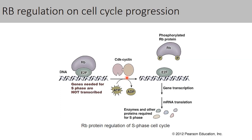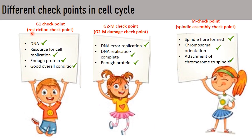The negative regulator retinoblastoma (Rb) regulates cell cycle progression as follows: E2F is a transcriptional factor that activates different target genes whose products — enzymes and proteins — are required for S phase. Retinoblastoma binds to E2F, making it inactive, so genes necessary for S phase are not transcribed. However, when CDK-cyclin is activated — for example through growth factors via the RAS pathway — retinoblastoma becomes phosphorylated, can no longer bind E2F, and the enzymes and proteins required for S phase are then synthesized.